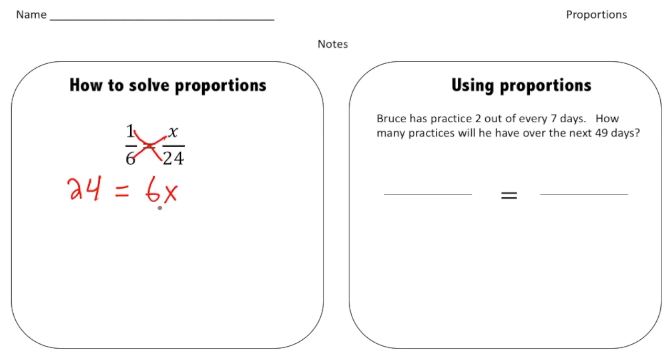Now what we can do is we can use algebra to get the x by itself. So this is six times x, so the opposite of timesing by six is dividing by six. And now when I solve for x, twenty four divided by six is four. And there's the answer. So when in doubt, write an equation by stating the cross products and then solve for the unknown.